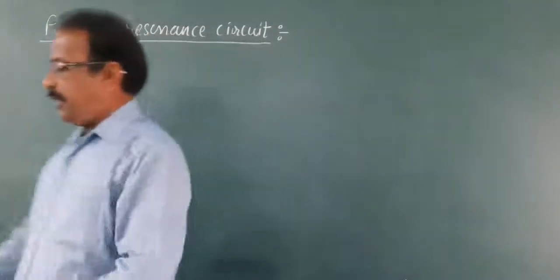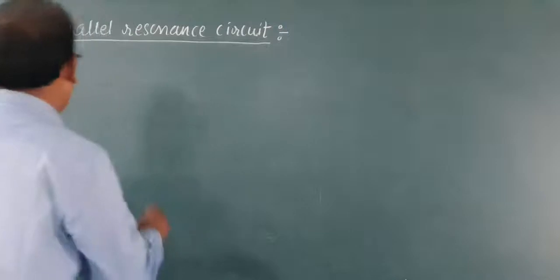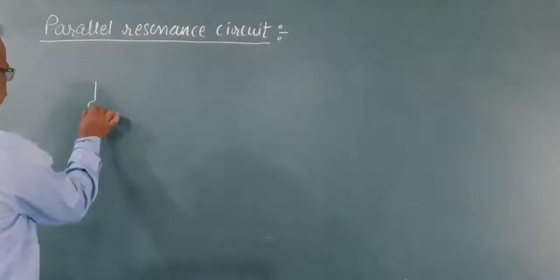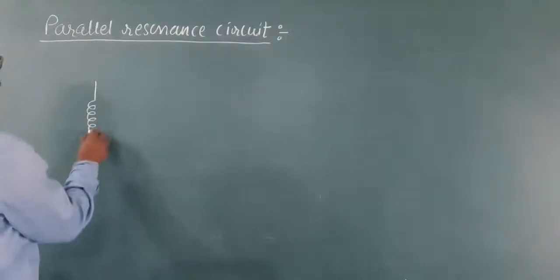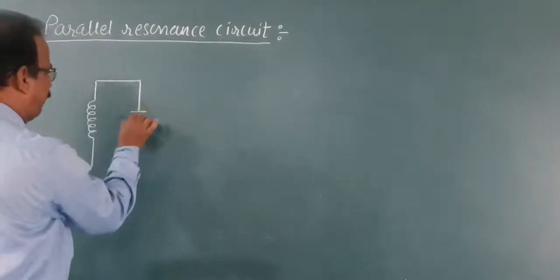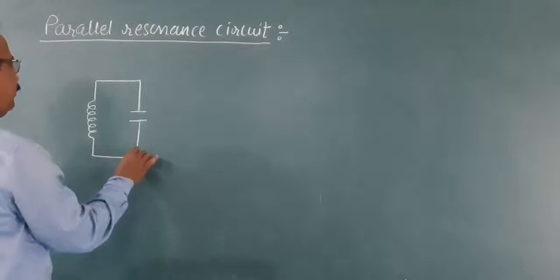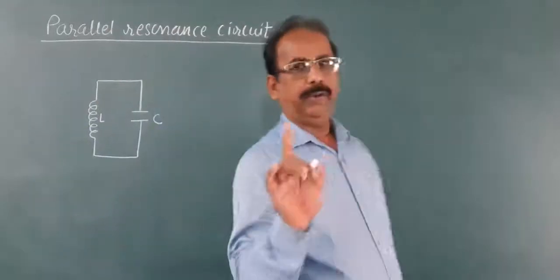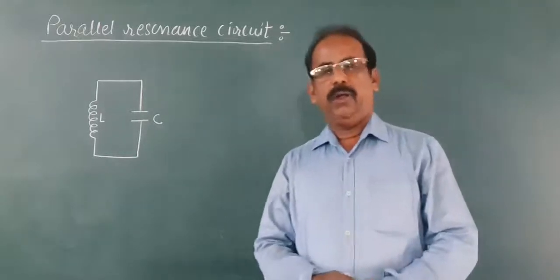This parallel resonance circuit consists of only two components. One is an inductor of self-inductance L, and the second is a capacitor of capacitance C, connected in parallel.